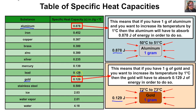It takes a lot more energy to heat water compared to metals like gold or lead. We can use this specific heat capacity table to solve problems involving how much thermal energy something absorbs or releases. Let's work through four different problems together.